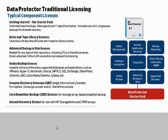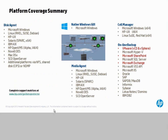This slide quickly illustrates some of the different licensing components available under the traditional model, including drive and tape library licenses, advanced backup to disk licenses, granular recovery extensions, and zero downtime backup licenses. From a platform coverage standpoint, we have disk agents for a long list of systems, the same for media agents, cell manager software available for Windows, HP-UX, and Linux, and online backup capabilities available for a wide range of different applications — including VMware, SharePoint, and Exchange.